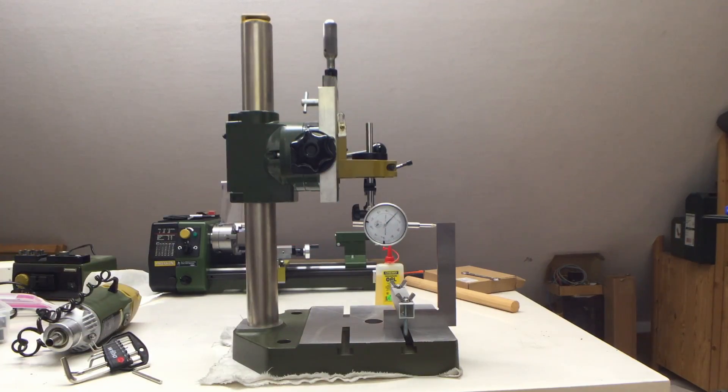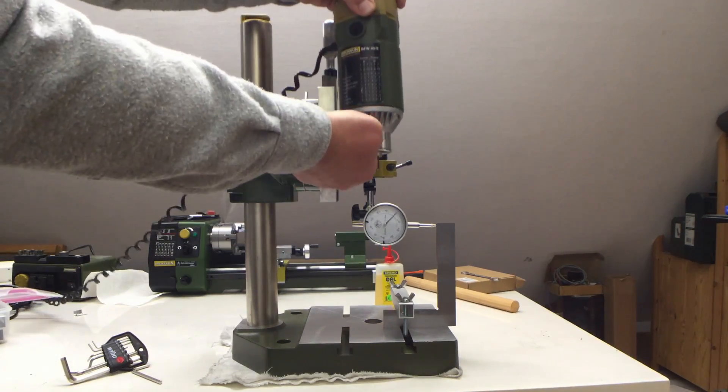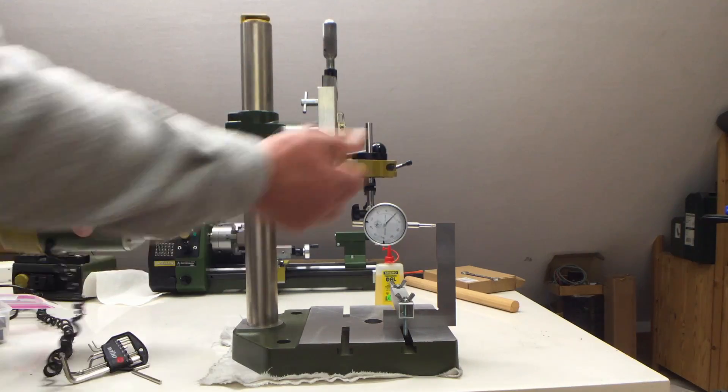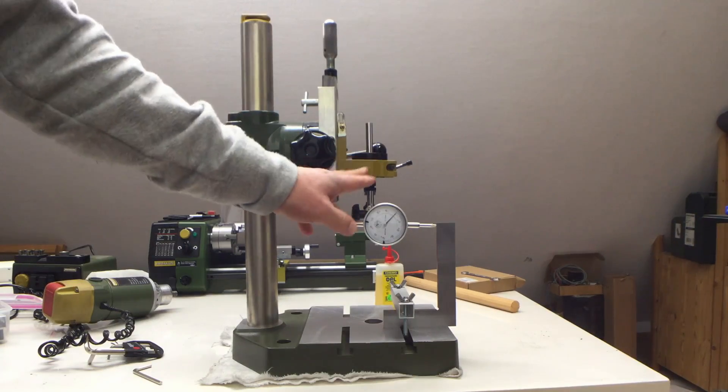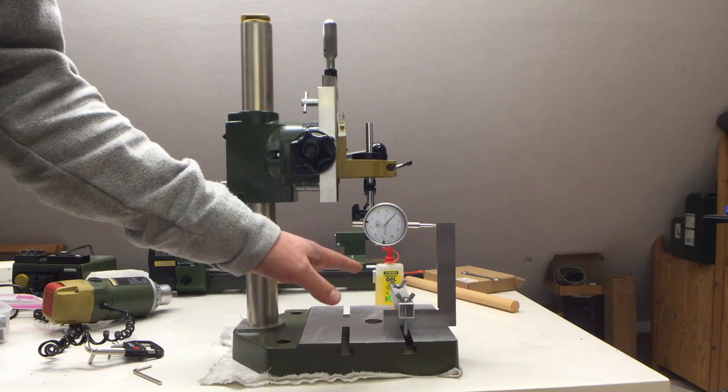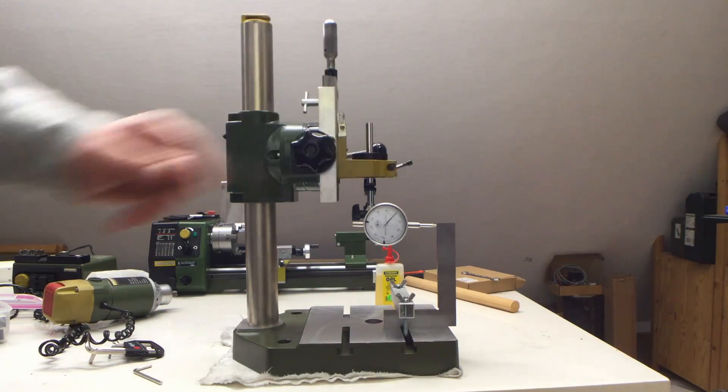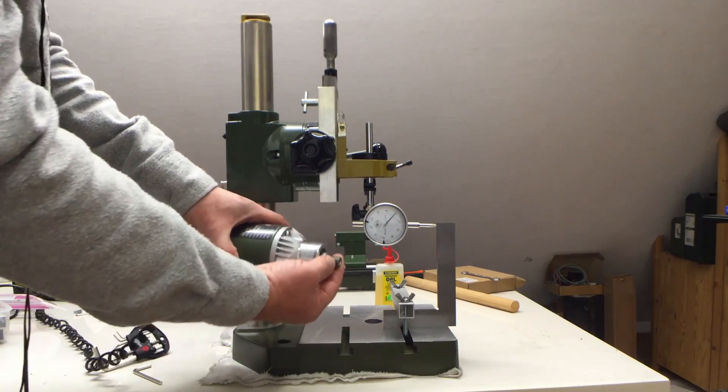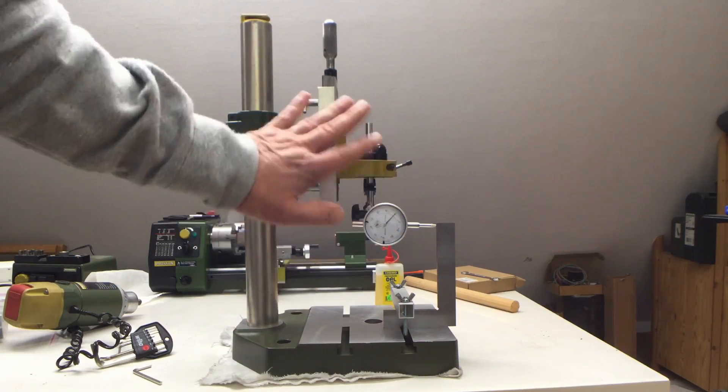That's it for today. Next time we will of course put the spindle in and then tram the spindle itself because that spindle clamp is also not the most precise. But before that there might be another small project like the one where I make that part here, because I need a way to attach my dial gauge to the spindle. Anyway, till then, bye.